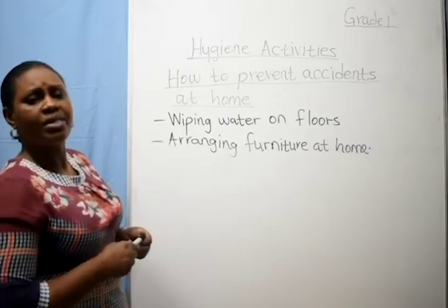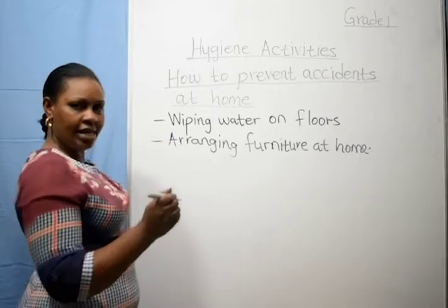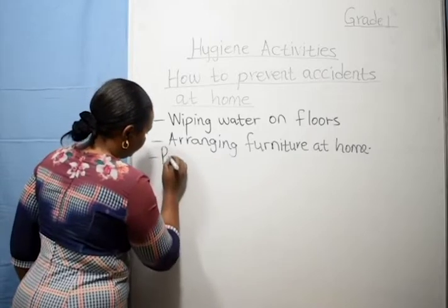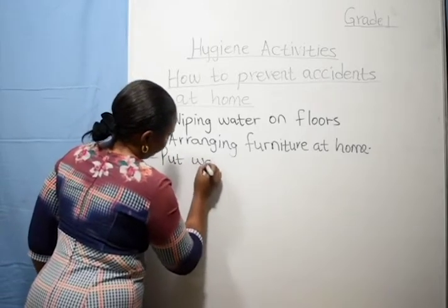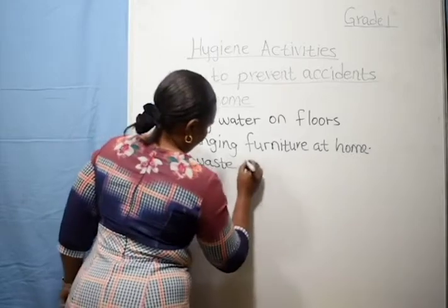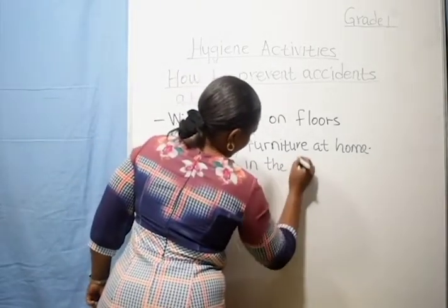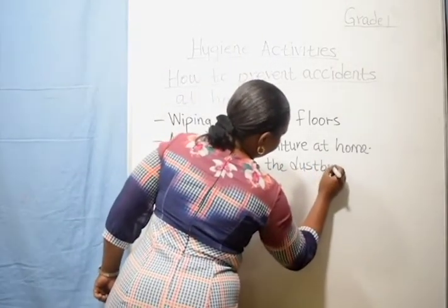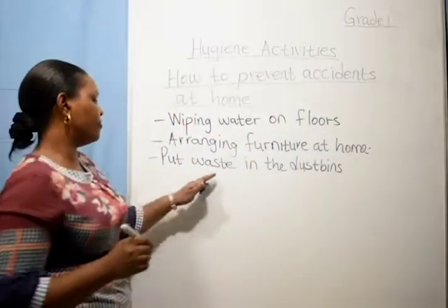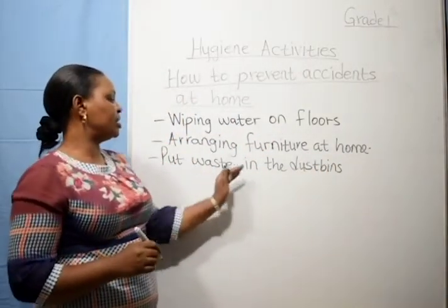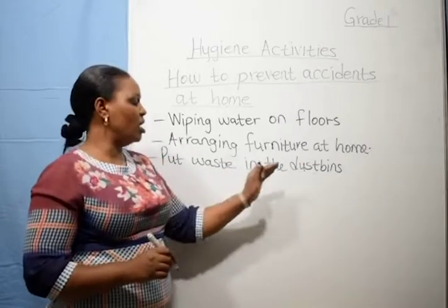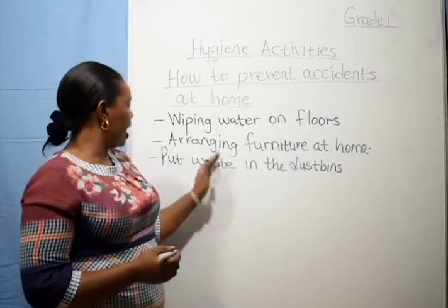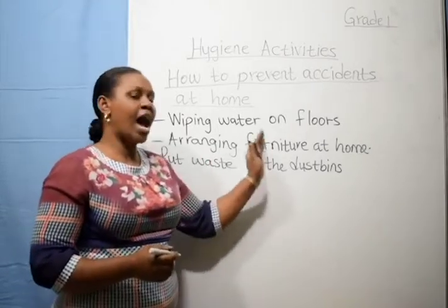Another thing you are supposed to do: put litter or banana peels in the dustbin. Make sure you put waste in the dustbin. After eating fruits like a banana, put the waste in the dustbin, because when you leave banana peels on the floor, you can slide and fall down. Those are the things you are supposed to do to prevent a fall.